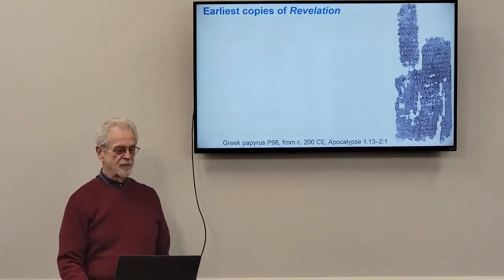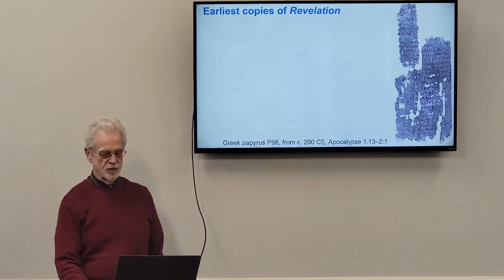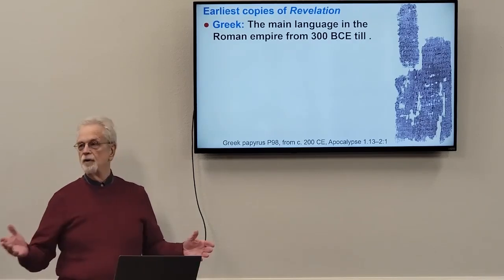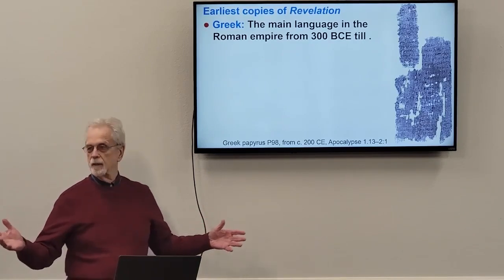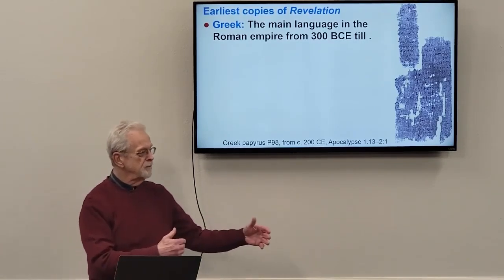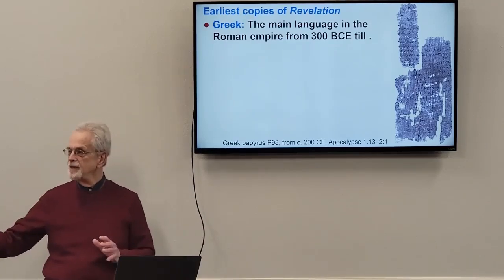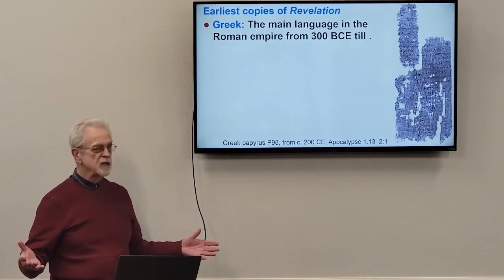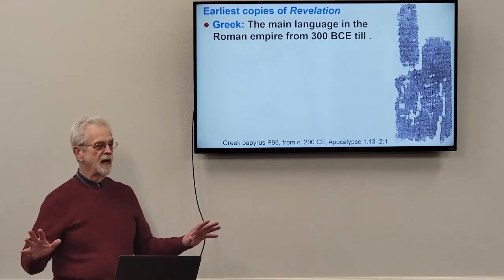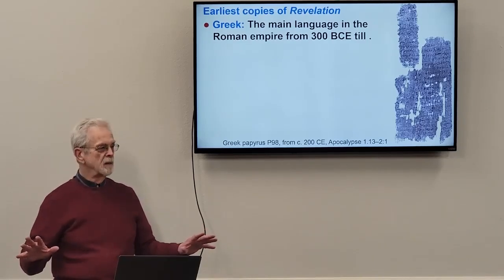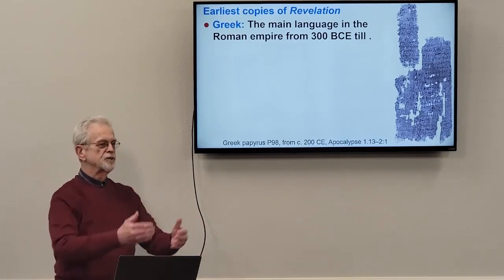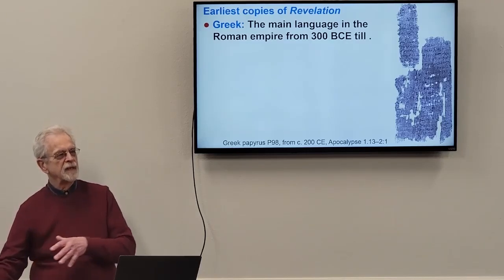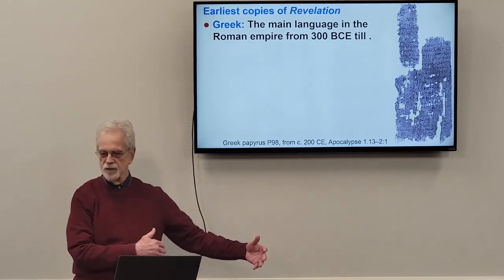Just a couple of things about the earliest copies of the book of Revelation. First, it was written in the Greek language, which was very prevalent throughout the Middle East, including the Holy Land, from about 300 B.C. to about 300 A.D. Nearly everyone who traveled, was educated, or was in business of any kind in the Greco-Roman Empire used Greek every day, just as Jennifer and I had to use French every day as the official language in the country we lived in.